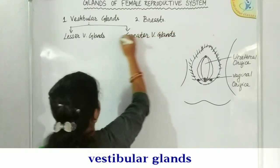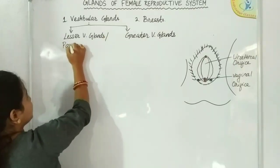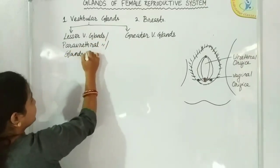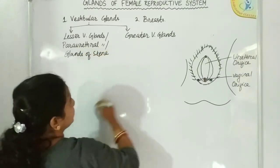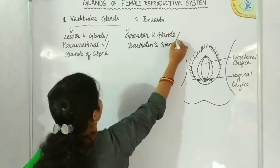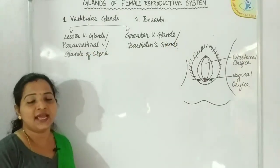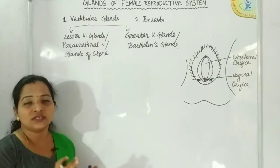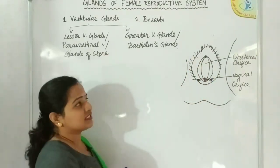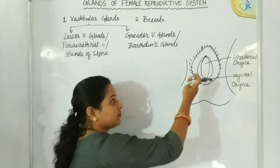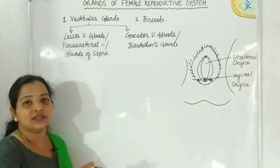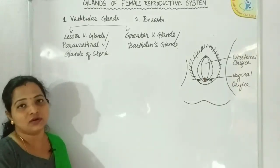The lesser vestibular glands are also called paraurethral glands or glands of Skene's. They are present behind and below on either side of the external urethral orifice, as you can see here. These glands are numerous and drain their secretion into the urethral orifice, not to the exterior of the vestibule.